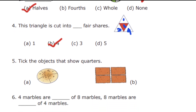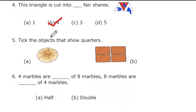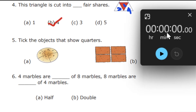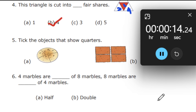Next question: pick the object that shows quarters. We need to select whether A is a quarter or B is a quarter. You just write whether it is A or B.